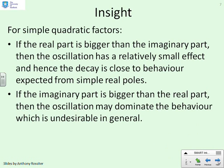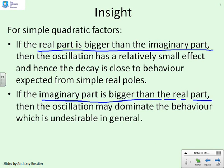The insights then. If you have a simple quadratic factor, if the real part is bigger than the imaginary part, then oscillation has a relatively small effect and hence the decay is close to the behaviour you would expect from simple real poles. Not exactly the same, but fairly close. If the imaginary part is bigger than the real part, then the oscillation will begin to dominate the behaviour. And this will be undesirable in general.